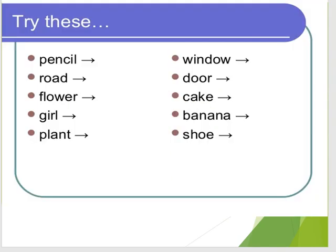Let's look. Pencil — it is singular. A pencil. But when we say plural, we add S: pencils, roads, flowers, girls, plants, windows, doors, cakes, bananas, shoes.